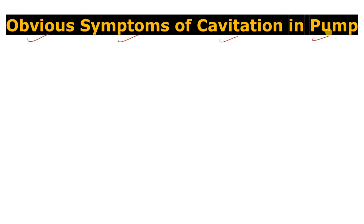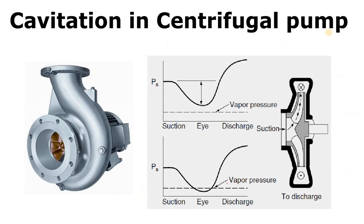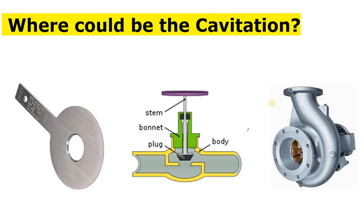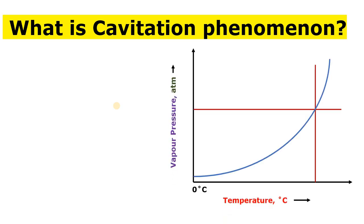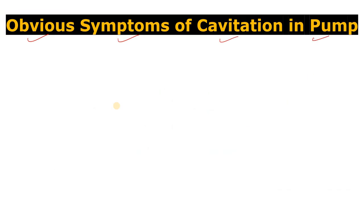Before this video, we have made some videos about cavitation. In our last video we discussed what cavitation is in a centrifugal pump — how it occurs, where it occurs, and the relation between cavitation and vapor pressure. Before that, we discussed where cavitation can occur apart from centrifugal pumps — such as in walls, orifices, and pipelines — and the science behind the cavitation phenomenon. In this video we will discuss the obvious symptoms of cavitation in centrifugal pump. If you haven't watched those videos, you can find them in the centrifugal pump playlist to build a better understanding.